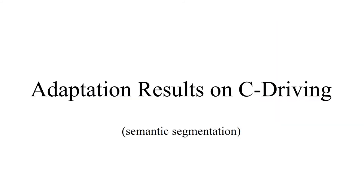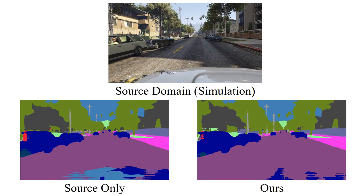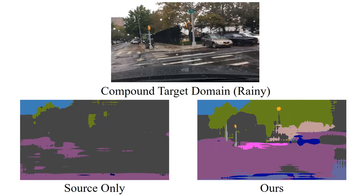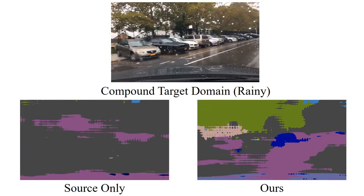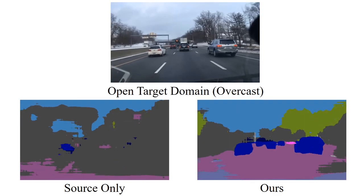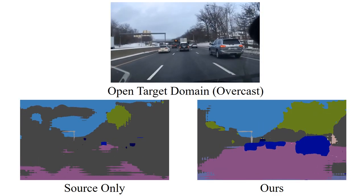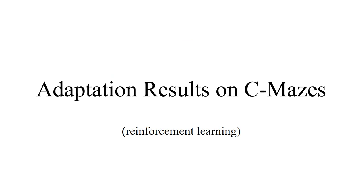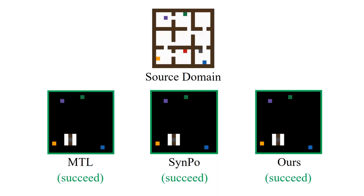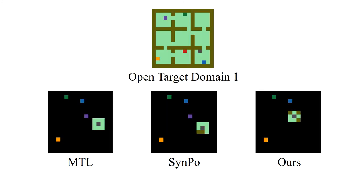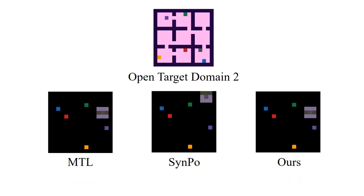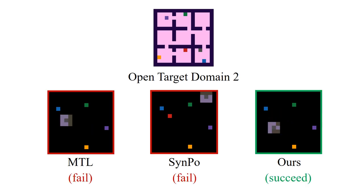For more results, these are the performances on source domain, on compound target domain, and on open target domain. For reinforcement learning, all methods succeeded in the source domain. Some failed in easier domains, and only our method succeeded in harder domains.